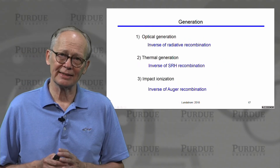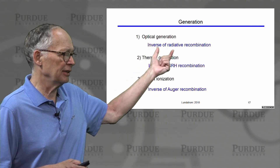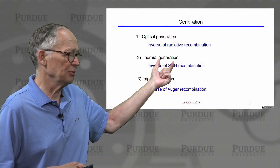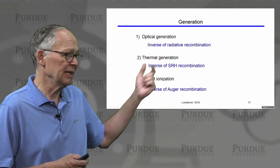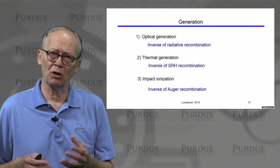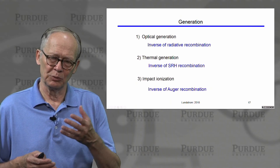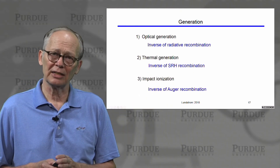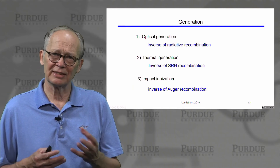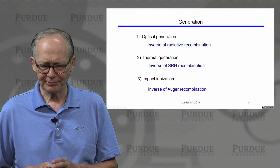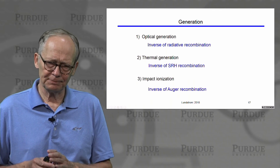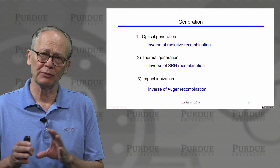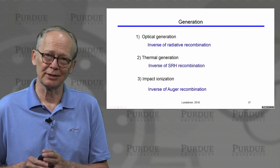We've discussed several generation processes in this lecture. Optical generation is the inverse of radiative recombination. Thermal generation — discussed in the previous lecture — is the inverse of Shockley-Read-Hall recombination through defects in the forbidden gap. And impact ionization is the inverse of the Auger recombination process. That's the final lecture in this series. We'll have one more lecture to wrap up the key points in Unit 4, and we'll continue that discussion in the next lecture. Thank you.